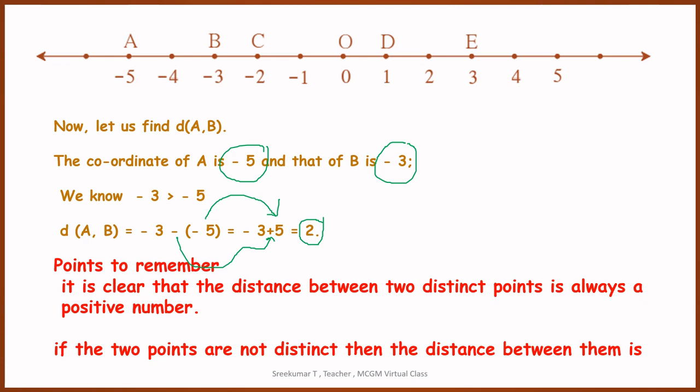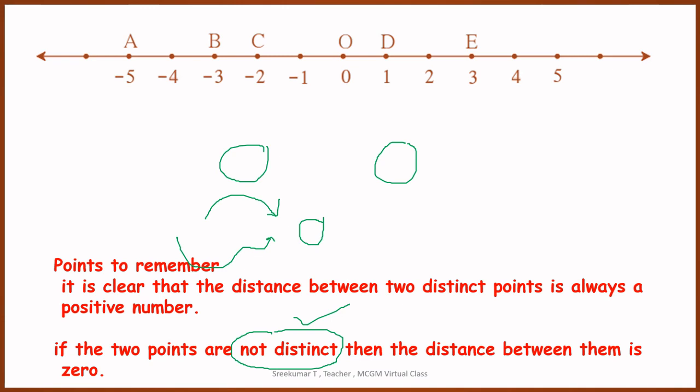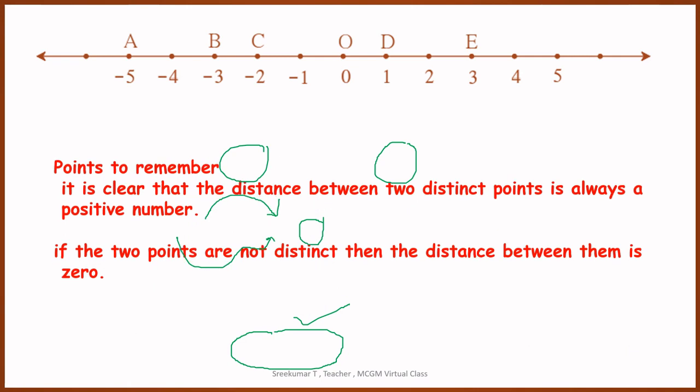The point to remember is that the distance between two distinct points on a number line is, by unit wise, positive. If the points are not two distinct points, not distinct, what is the distance between coordinate points A and A? The answer will be automatically 0. So the point is clear here. The distance between two distinct points is always a positive number. If two points are not distinct, then the distance between them will be 0.